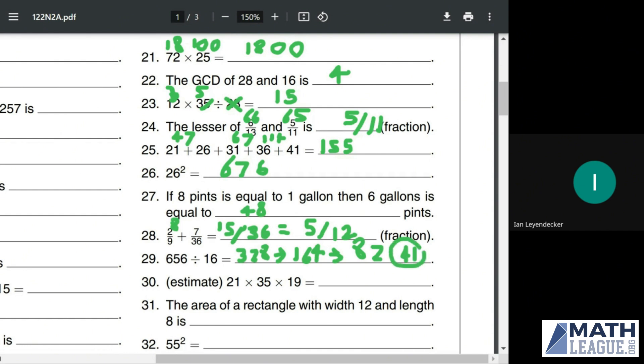Then estimate 21 times 35 times 19. First of all, again, since it's an estimation question, we can round things around and make an easier multiplication. 21, we can turn that into a 20. 19, we can also turn into a 20. 20 times 20 is 400, and 400 times 35, well, 4 times 35 is going to be 2 times 70 or 140. And then we just attach two more zeros for 14,000 as our estimate.